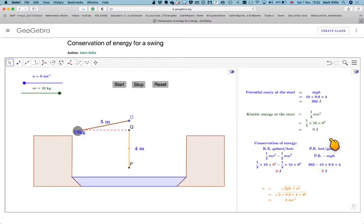Which at the moment is going to be 392, because that's how much potential energy it has at the start, minus MGH. So we've got 392 minus 392, which gives me 0.